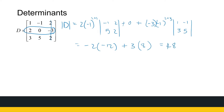When calculating determinants by cofactor expansion, do yourself a favor and choose the row or column with the most zeros, because it makes the calculation much easier. I chose row 2, but remember you can choose row 1 or any other row or column — the answer will be the same. A good way to practice is to take one 3x3 matrix and calculate the determinant six different ways; you should get the same answer every time.